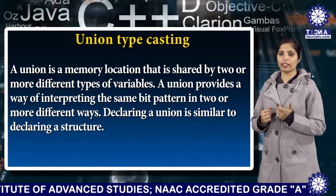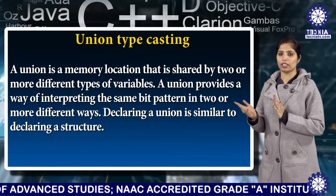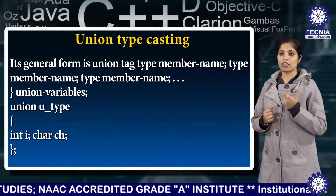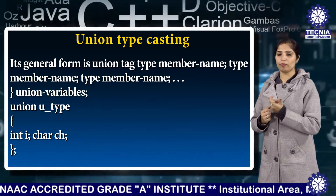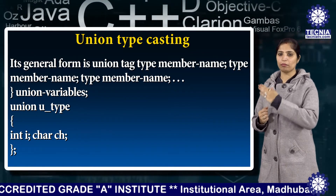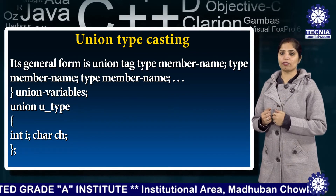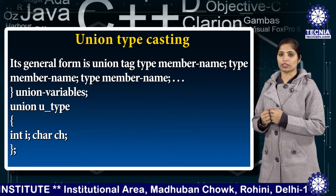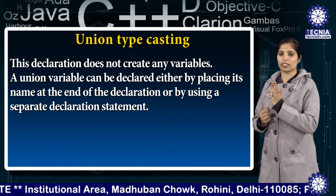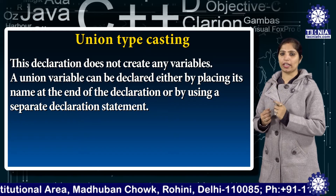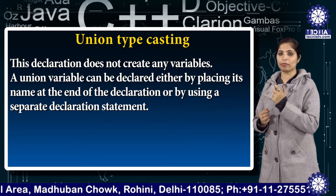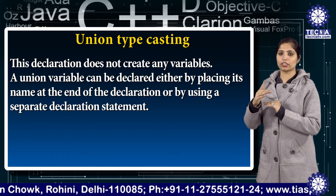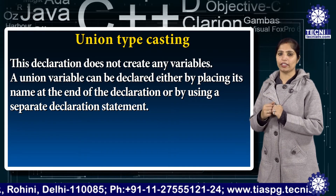Declaring a union is similar to declaring a structure. Its general form is: union tag_name, then in braces, type member_name and so on with different data types, closed with the union variables. This declaration does not create any variable — for example, union tag_name with int i and char ch, which includes two different data types int and char.